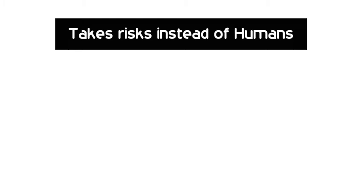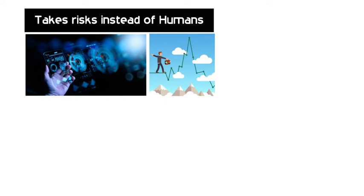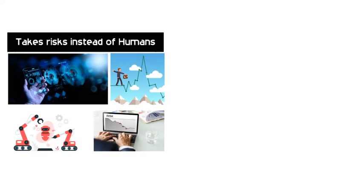2. Takes risks instead of humans. This is one of the biggest advantages of Artificial Intelligence. We can overcome many risky limitations of humans by developing an AI robot which in turn can do the risky things for us.